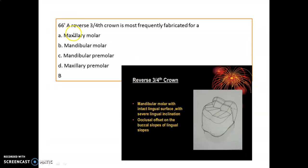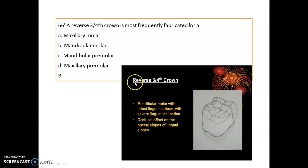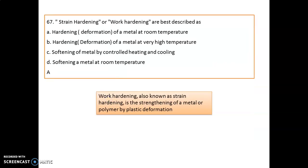A reverse three-fourth crown is most frequently fabricated for which tooth? Remember, it is fabricated mostly for the mandibular molar — a mandibular molar with intact lingual surface and with severe lingual inclination. In such cases you can go for a reverse three-fourth crown, where the lingual surface is not covered by the fabricated crown.